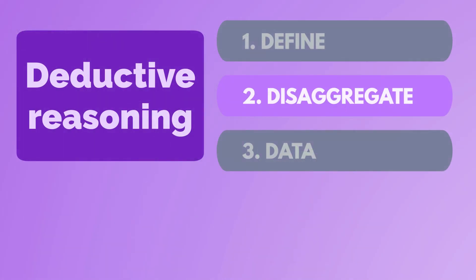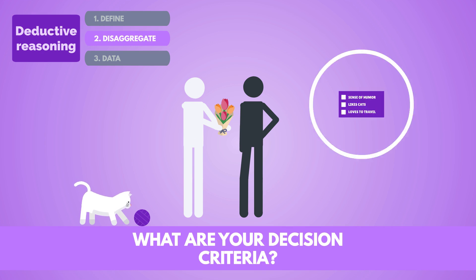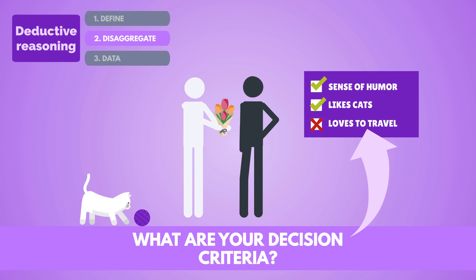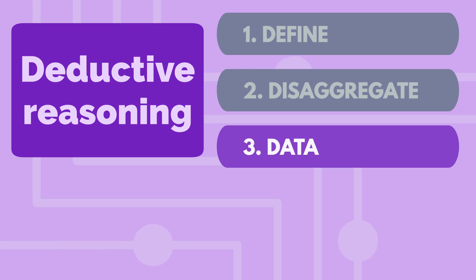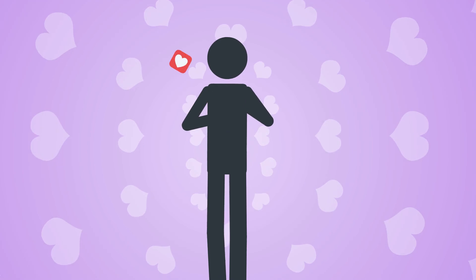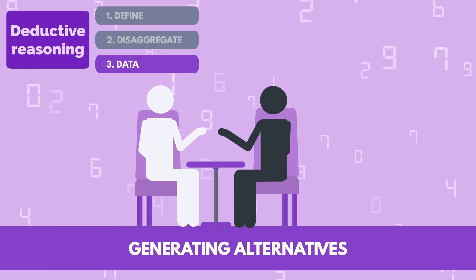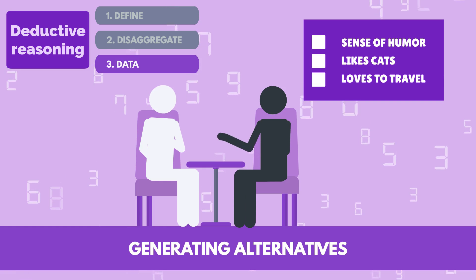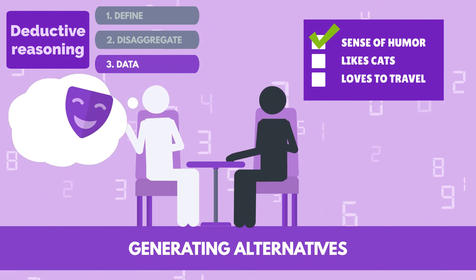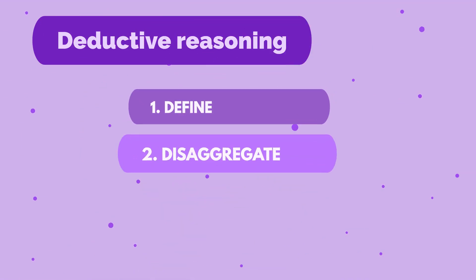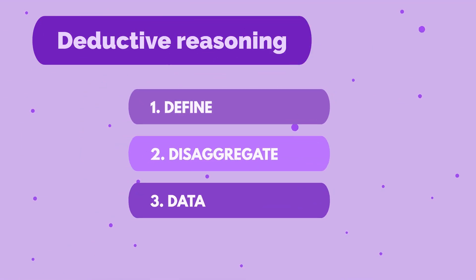Next, you work to disaggregate the problem. What are your decision criteria? Sense of humor? Will they tolerate your cat? Do they like to travel? Is there that spark? Are these criteria equally important? I can travel by myself, but I'm definitely not getting rid of my cat. Then you move on to the third step, which is Data — generating alternatives. In this case, it means actually dating real people rather than just imagining the perfect person inside your head. As you meet more people, you're able to compare them to the criteria and select the right candidate. The challenge is to figure out when good enough is both good and enough — that's when you stop searching.